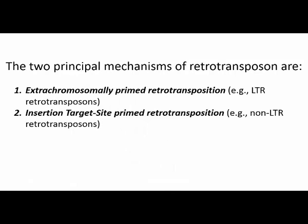There are two basic mechanisms of retrotransposition. These are extra-chromosomally primed retrotransposition, which is characteristic of LTR retrotransposons, and target-primed retrotransposition, characteristic of non-LTR elements. Remember that autonomous retrotransposons encode the activities they need for transposition, and the activity of autonomous retrotransposons will be required for the mobility of non-autonomous retrotransposons, such as the SINEs.